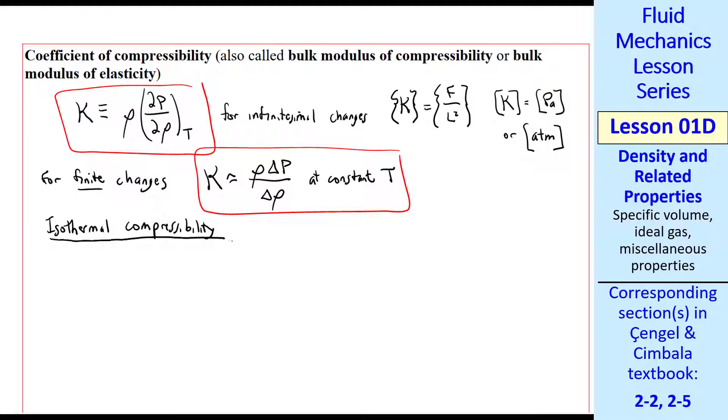So it's just the reciprocal of kappa, so it's not really a new property. I mention it because if you can't find kappa, you might be able to find alpha online or in some tables. Then just take the inverse to get kappa.